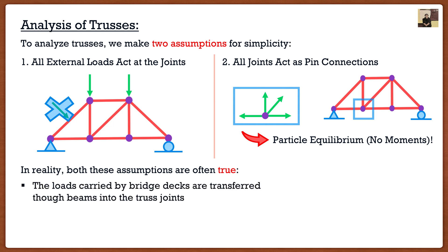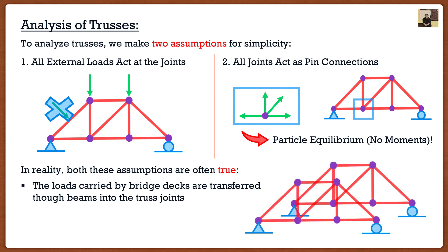If we were to look at the first assumption where all our external loads act at the joints, as engineers, we actually design our truss bridges for this to be true. Remember that for a truss bridge, it's basically two planar trusses running parallel to each other, and the railroad or the bridge acts in between. This bridge or railroad that acts in between on that nice flat plate is actually supported by beams underneath. These beams, which I've now shown in green, we only connect them to the joints of our truss. You never see one of these beams connected to the middle of a member. As engineers, we can make sure that this first assumption holds true.